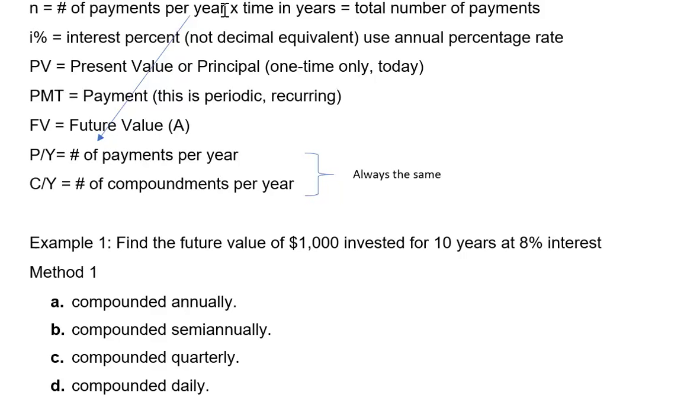It's also important to note that this factor of 12 for example for monthly payments times the time in years goes in N. The 12 also goes down here in our P/Y which represents payments per year and is always the same as the compoundment per year or the number of compounding periods per year.